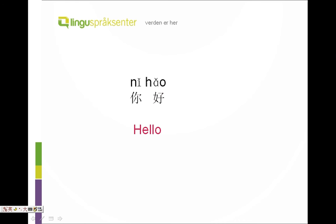你好 (nǐ hǎo), which means hello in Chinese. In these two syllables, n and h are initials, and i and ao are finals. The marks above the finals are tones.